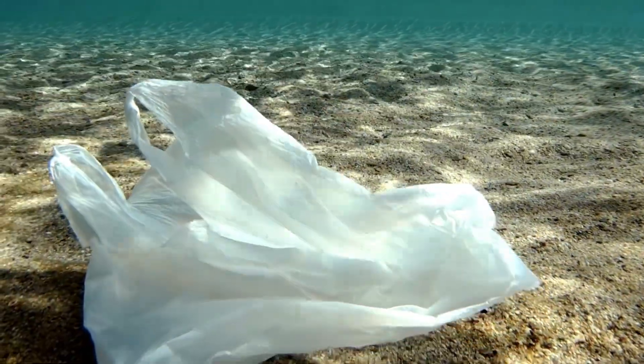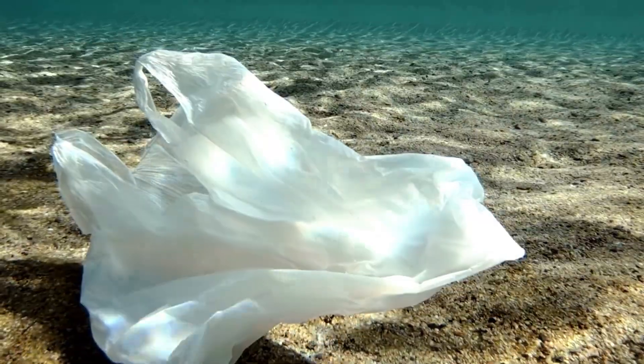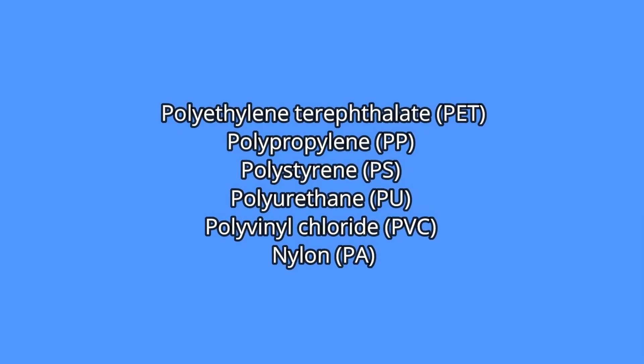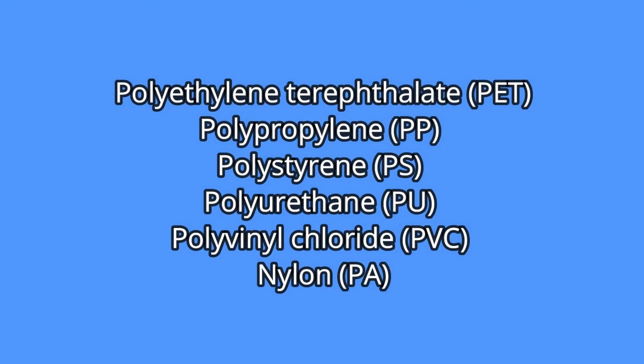Microplastics are also a problem. They are small pieces of plastic with a size of less than 5 millimeters. This size can be reached by degradation or they may already be this size. The types of plastics related to the formation of microplastics are polyethylene terephthalate, polypropylene, polystyrene, polyurethane, polyvinyl chloride, and nylon.